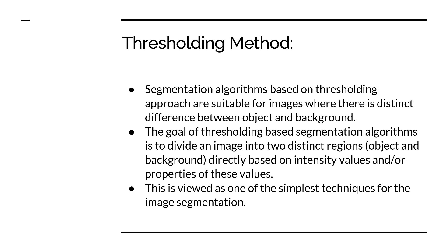This method is suitable wherever there is a distinct difference between the object and the background in the image. I have an image — I can use the thresholding method if there is a distinct difference available between the object and the background. The goal of this segmentation algorithm is to divide the image into two distinct regions, separating the object versus the background, based on intensity values or properties of these values.